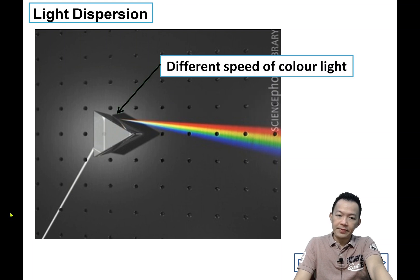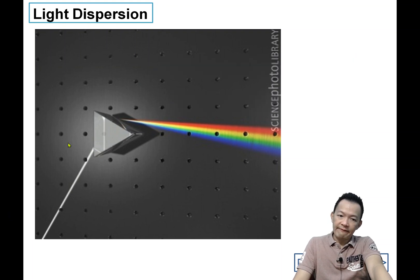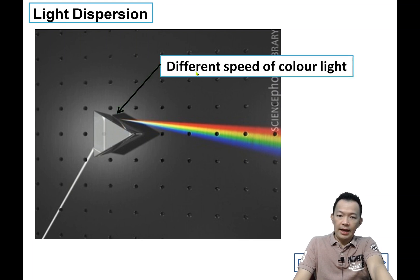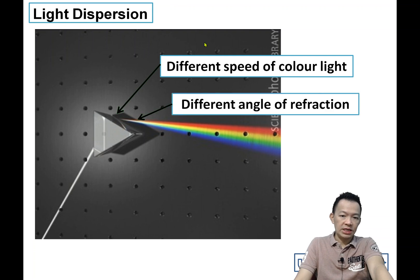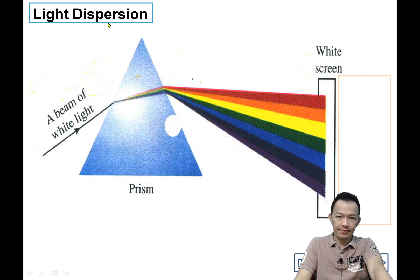Different angle of refraction because the refraction angle is different. Any example? When the white light passes through the prism, when the white light travels from a medium entering another medium from the air into the prism, all the colors in the white light travel at different speeds.